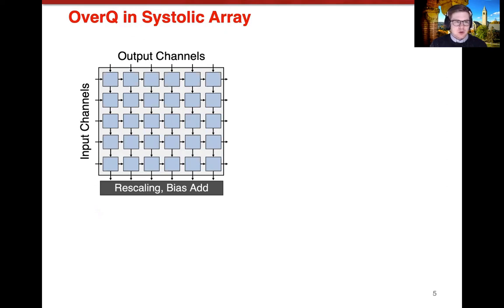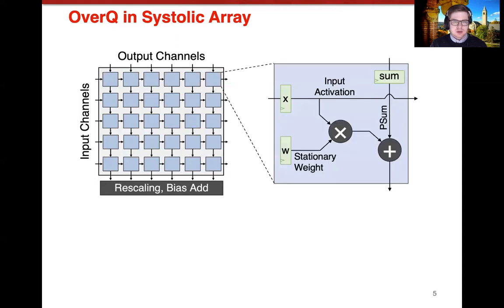Now to generalize that even further, these dot products could be considered to be calculated within a systolic array. Specifically, this is a weight stationary systolic array. The activations come in from the left, from the input channels. They come in where the weight is, they are multiplied by the weight, and then they are summed downward in the channels for the output channels, and then they're rescaled and the bias is added.